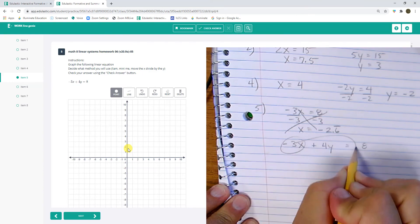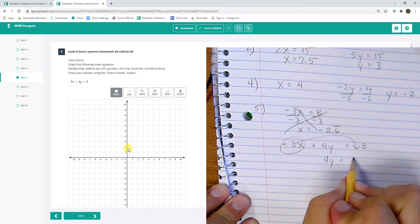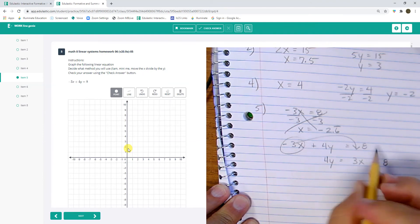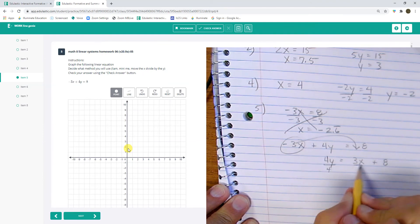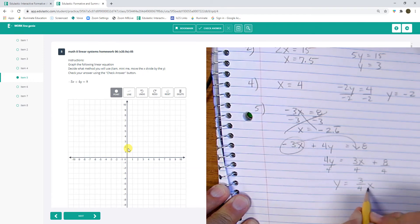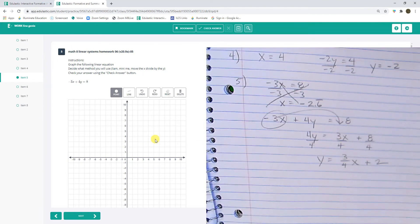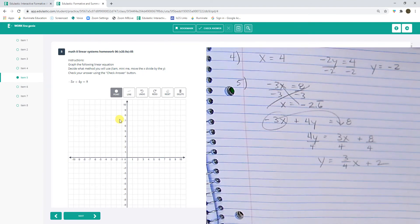Move the x. Divide by the y. Then you have to simplify. And now it's in slope-intercept form, and now I can graph it. So I'm going to go with a 2. And I'm going to move the x.